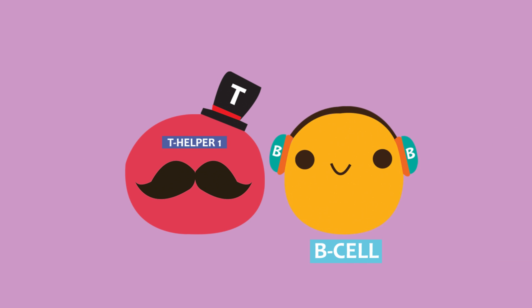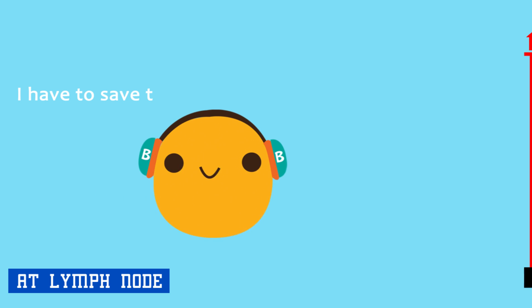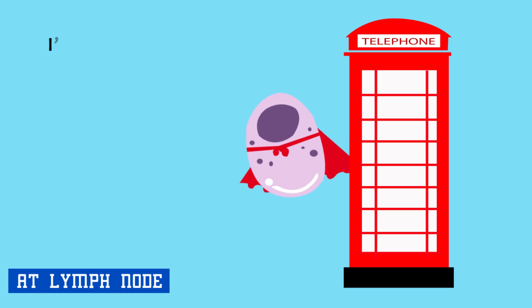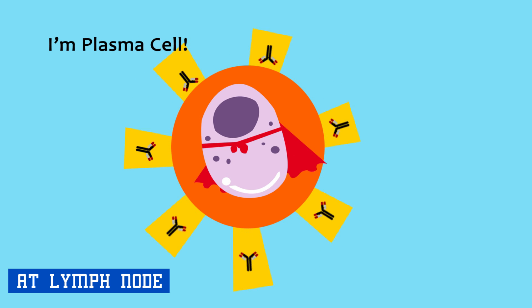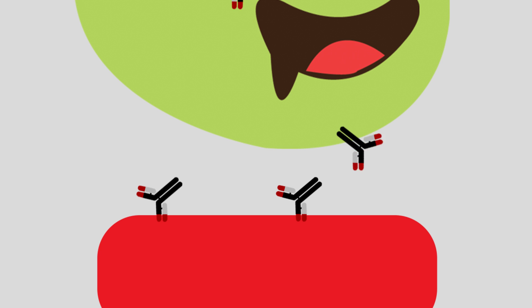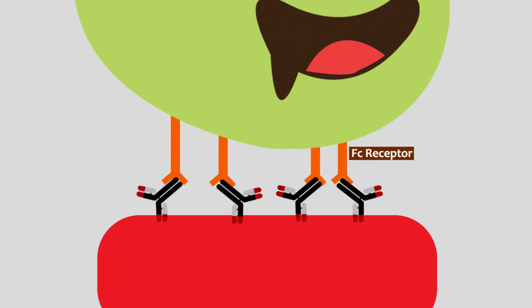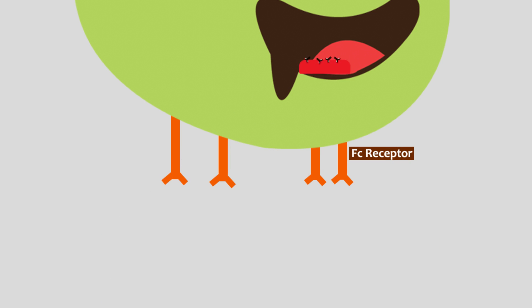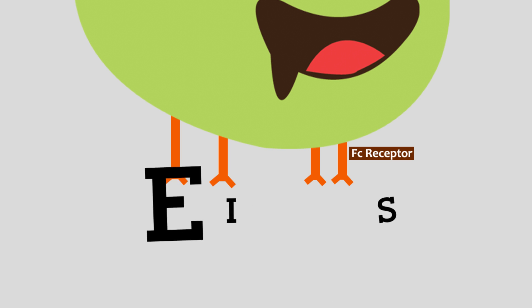At the same time, T-Helper-1 also activates B-cells to differentiate and proliferate into plasma cells. Plasma cells produce antibodies. The antibody may help combat intracellular bacteria via several ways. For example, opsonization is a process in which antibody binds with a specific antigen, and the Fc molecule binds to the Fc receptor of phagocytes using the Fc portion, which helps promote phagocytosis.